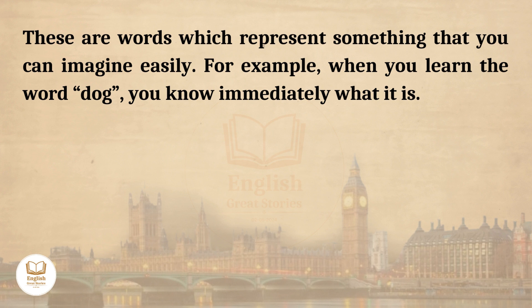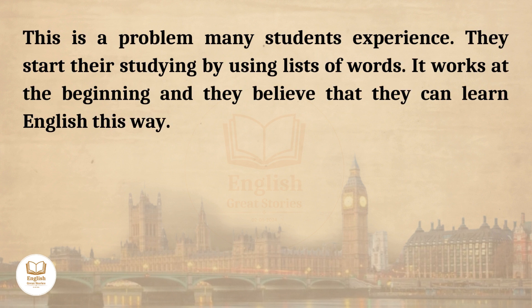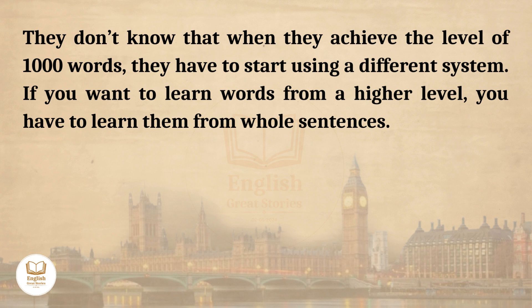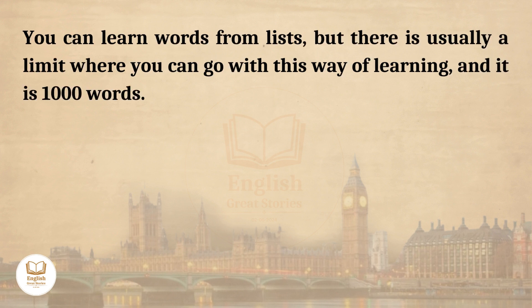For example, when you learn the word dog, you know immediately what it is. You have a clear idea in your head what the word means. Yet when you want to learn words such as appreciate or suppose, this system doesn't work well. This is a problem many students experience. They start their studying by using lists of words. It works at the beginning and they believe that they can learn English this way. They don't know that when they achieve the level of 1,000 words, they have to start using a different system. If you want to learn words from a higher level, you have to learn them from whole sentences. If you understand the meaning of a word in the context of a sentence, you will learn the word much better. You can learn words from lists, but there is usually a limit, and it is 1,000 words.